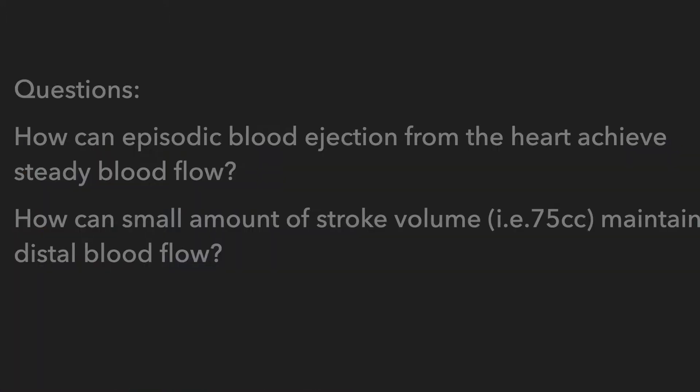I want to start by asking you two questions. How can episodic blood ejection from the heart achieve a steady blood flow? And how can this small amount of pulsatile blood flow — which is stroke volume, probably only around 75 cc — maintain a distal blood flow? It's kind of an interesting question, right?